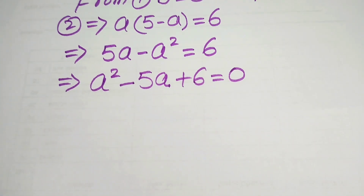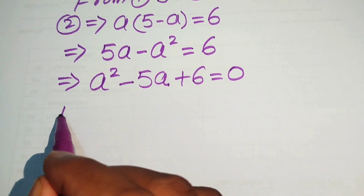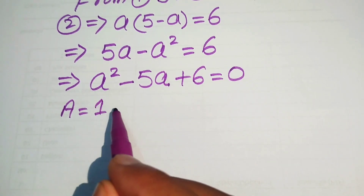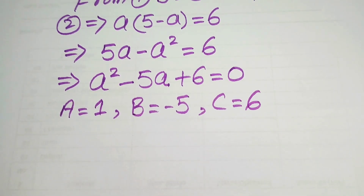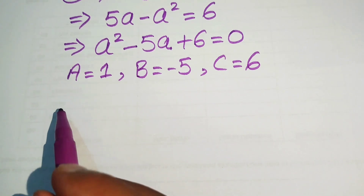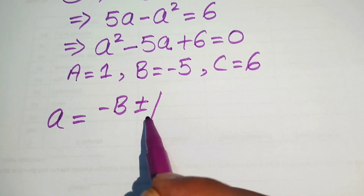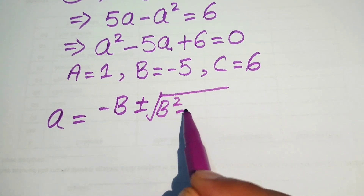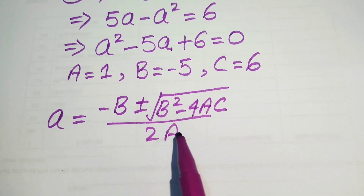This equation is quadratic in variable a, so we can find the values of a using the quadratic formula. The coefficients are: capital A equals 1, capital B equals minus 5, and capital C equals 6. The quadratic formula is: small a equals minus B plus or minus square root of (B squared minus 4AC), divided by 2A.